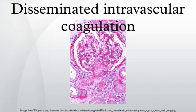At the same time, thrombocytopenia occurs, attributed to the entrapment and consumption of platelets. Clotting factors are consumed in the development of multiple clots, which contributes to the bleeding seen with DIC. Simultaneously, excess circulating thrombin assists in the conversion of plasminogen to plasmin, resulting in fibrinolysis. The breakdown of clots results in an excess of fibrin degradation products (FDPs), which have powerful anticoagulant properties, contributing to hemorrhage. The excess plasmin also activates the complement and kinin systems, leading to clinical symptoms such as shock, hypotension, and increased vascular permeability.